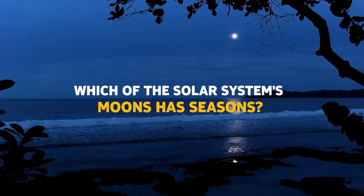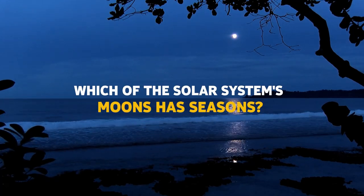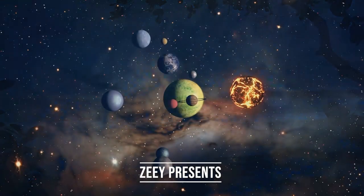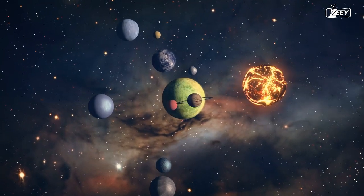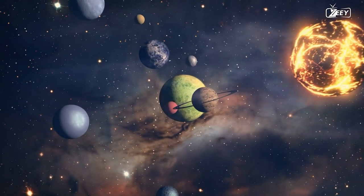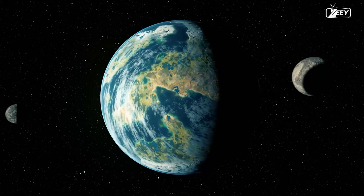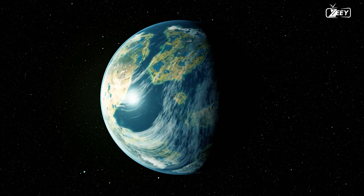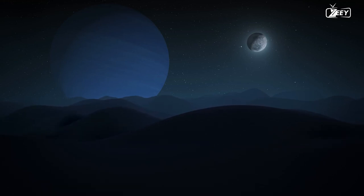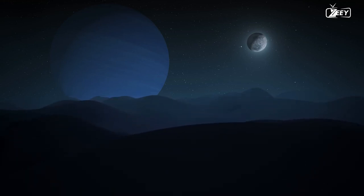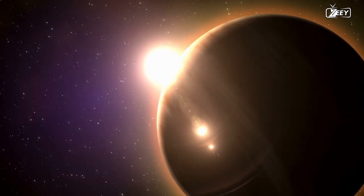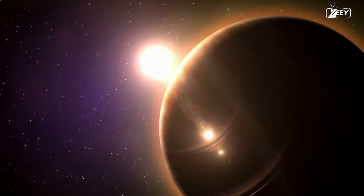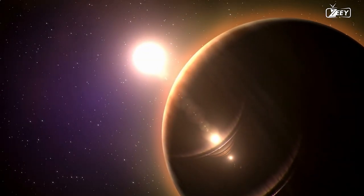Which of the solar system's moons has seasons? Other planets in the solar system, except Earth, suffer those periodic climate variations that we call seasons, as we learned in our last video about how seasons are on the other planets in the solar system. Seasons on other worlds, on the other hand, are certainly extremely different from what we have here on Earth. Nonetheless, the basic differentiation pattern is the same for all planets.